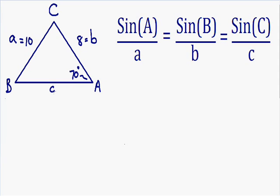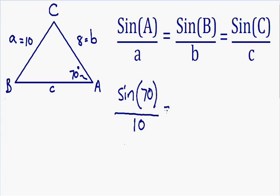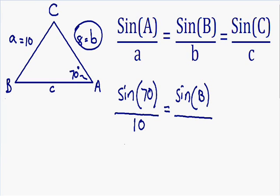Solving this triangle using the law of sines is going to be a bunch of plugging and chugging. We have angle A, which is 70 degrees, and the length of side A, which is 10. So let's plug everything in: the sine of 70 divided by 10 is equal to the sine of angle B — which we don't know yet — divided by the length of side B, which is 8.